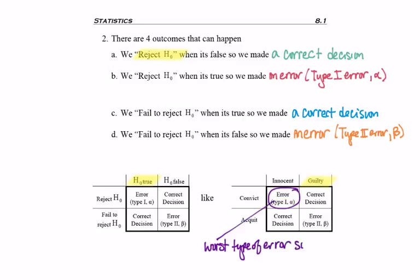Since Type I is the worst type of error, we want to minimize the chance of it happening. So we make alpha as small as possible. It's considered worse to send an innocent person to jail than to let a guilty person go.